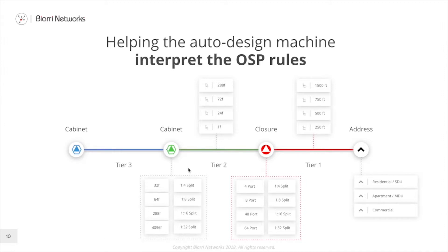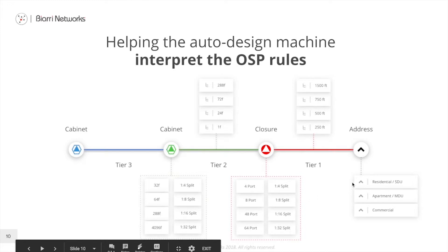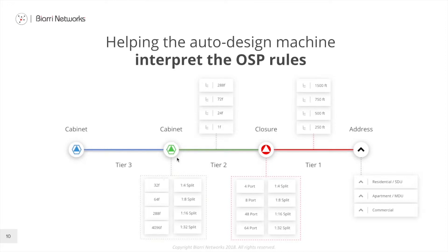The cabinet size determines how many addresses can connect back to it. Autodesign will try hard to minimize the number of cabinets. We can also specify a percentage of spare capacity to be left at that cabinet — for example, always leave 10% of the ports free — so Fond will minimize the number of cabinets while also allowing some spare for future growth.